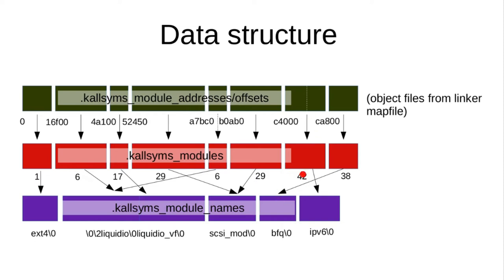There are some optimizations I would carry forward regardless. For example, liquid.io has a bunch of object files used in multiple modules simultaneously. Things which are only used by liquid.io VF do not store the name a second time — they point into it. So any given module name is stored only once, and the same will be true for translation units.